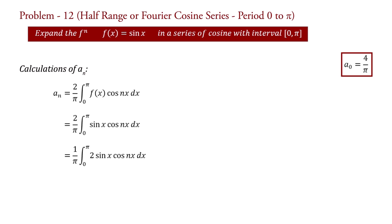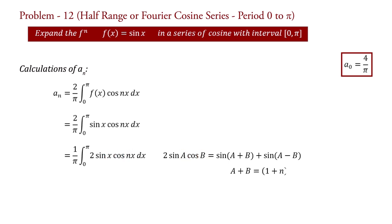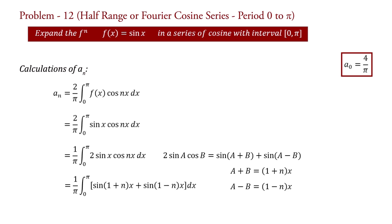We apply the trigonometric identity: 2 sin(a) cos(b) = sin(a+b) + sin(a−b). In our formula a = x and b = nx, so a+b = (1+n)x and a−b = (1−n)x. Therefore aₙ = (1/π) integral from 0 to π of [sin((1+n)x) + sin((1−n)x)] dx.